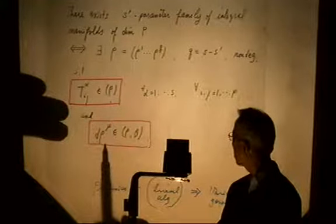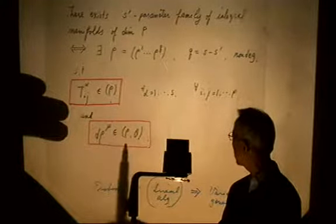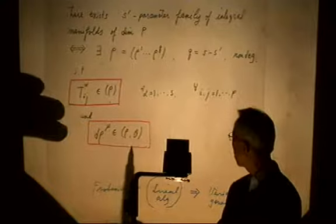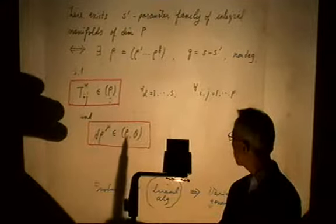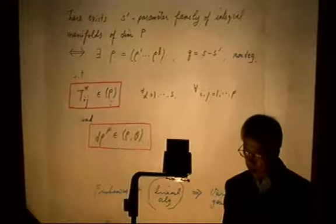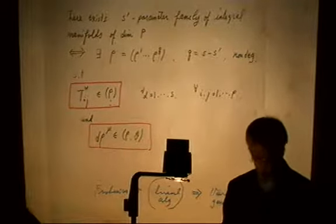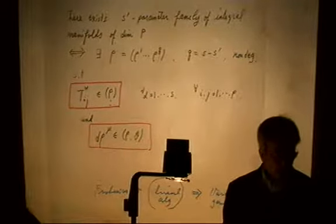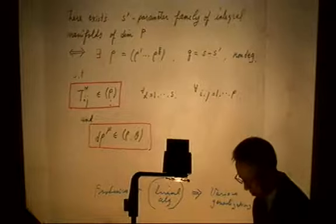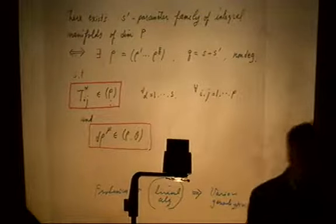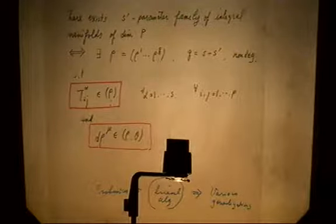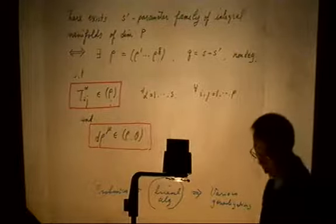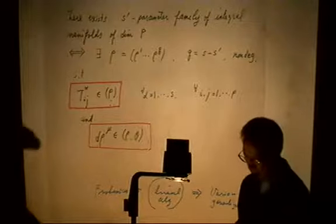Each entry of the torsion matrix belongs to the ideal generated by the rho's, and each d-rho belongs to this ideal as well. So it is enough to find such functions rho. Let me explain why that is true.